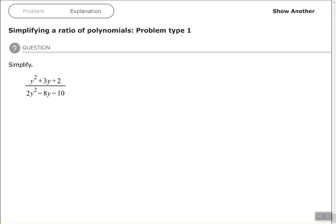Hey good people, Arthur Morris here. I hope all is well and in this video we are going to look at one problem, simplifying a ratio of polynomials, problem type 1: factor and cancel.